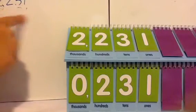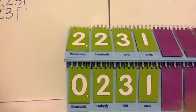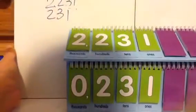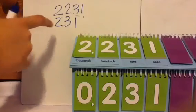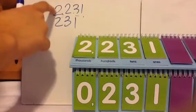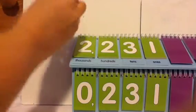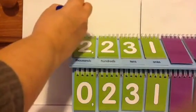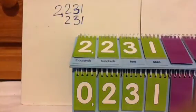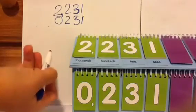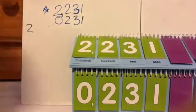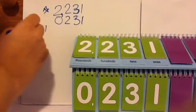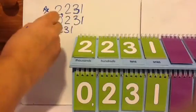The problem-solving strategy is to write both numbers on top of each other where the place values match. Make sure you write them right on top of each other — hundreds on top of hundreds, thousands on top of thousands. If done correctly, you can see that 231 has zero in the thousands place, while 2,231 has two thousands. So obviously 2,231 is larger.